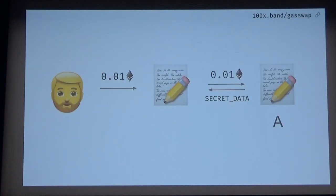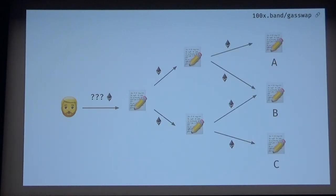As Bob, you call a smart contract that needs secret data, you pass some ETH, and that ETH is passed along to the contract, it returns secret data — happy. But what happens if Bob calls a contract and that contract needs two contracts, and all those require ETH? Now all the contracts need to accept ETH and then pass the ETH around. Bob also needs to know how much ETH to pay, and that's very messy.